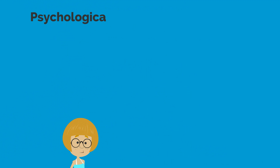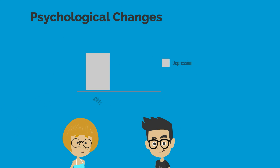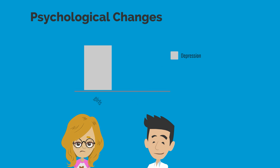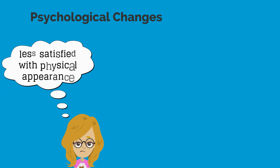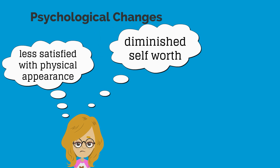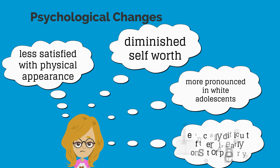Let's now move to psychological changes. Prior to puberty there is no gender difference in depression rates between boys and girls. During puberty, however, the prevalence of depression is twice as great in girls compared to boys. Girls can become less satisfied with their physical appearance and develop diminished self-worth. These tendencies are more pronounced in white adolescents, and the transition is especially difficult with an early onset of puberty.